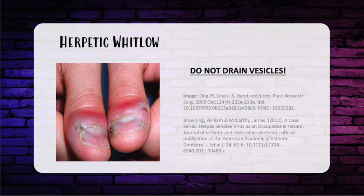Herpetic Whitlow is associated with herpes simplex virus, and you see multiple vesicles on the finger. Think dentists, dental hygienists, and young children — anyone in contact with a lot of saliva. A Tzanck smear will show giant cells with intranuclear inclusions. Treatment is observation, as it's a self-limiting disease resolving in about one to three weeks. Acyclovir can shorten the course, but it has to be given within two to three days of symptom onset.